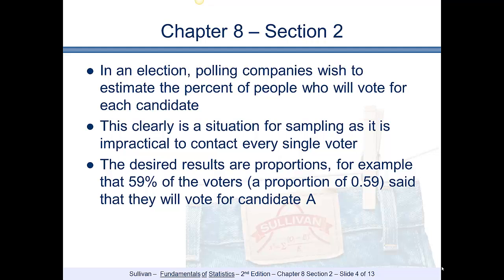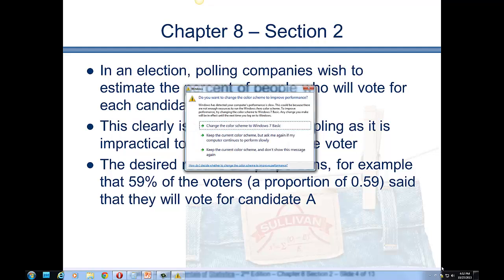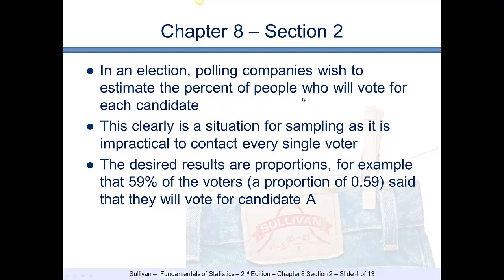In an election, polling companies wish to estimate the percent of people who will vote for each candidate. This is relevant to what's going on now in New York City — we're going to vote for a new mayor. This is clearly a situation for sampling, as it is impractical to contact every single registered voter. The desired results are proportions; for example, 59% of voters — a proportion of 0.59 — will vote for candidate A.